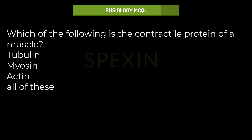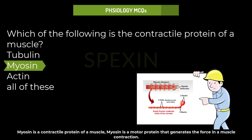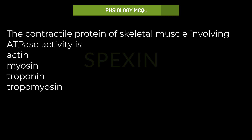Which of the following is the contractile protein of a muscle? Options: tubulin, myosin, actin, or all of these. Myosin is a contractile protein of muscles; myosin is a motor protein that generates the force in a muscle contraction.